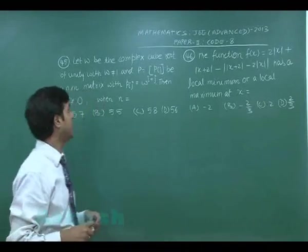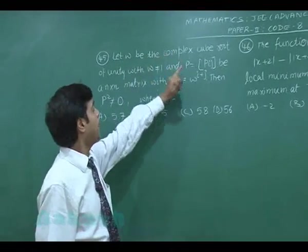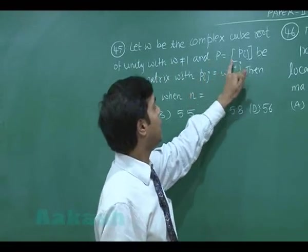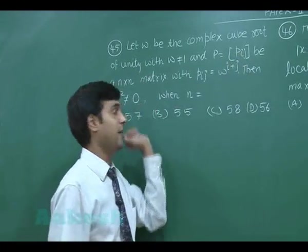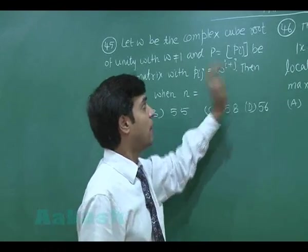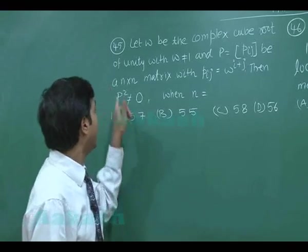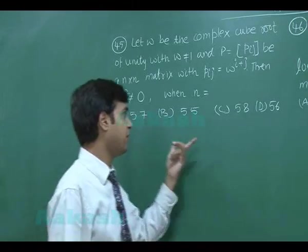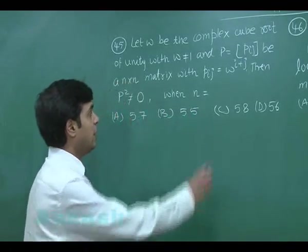Let omega be the complex cube root of unity with omega not equal to 1, and P be an n×n matrix where P_ij = omega to the power (i + j). We need to determine when P² is not equal to 0. The four options given are n = 57, 55, 58, 56.